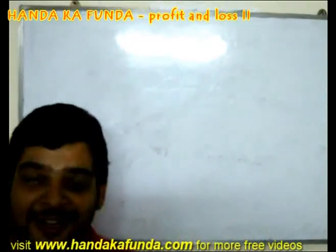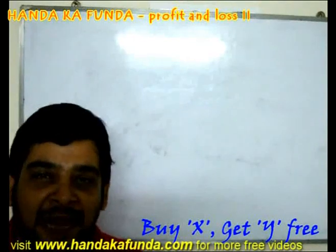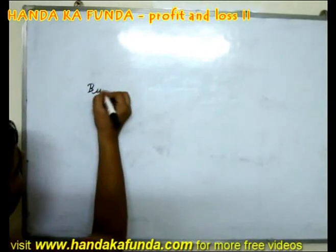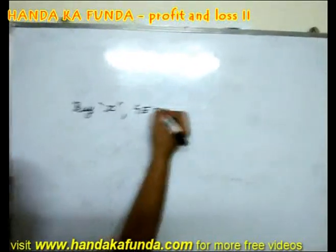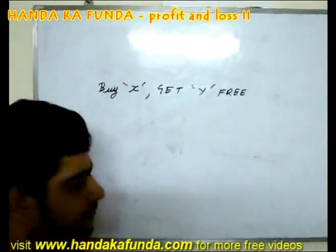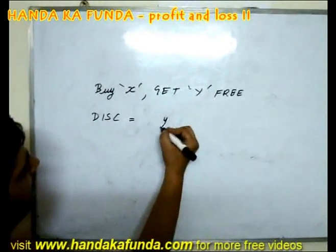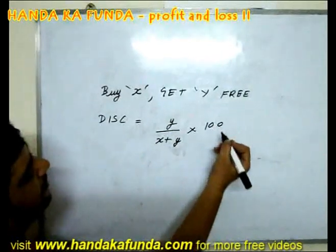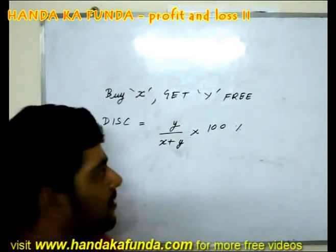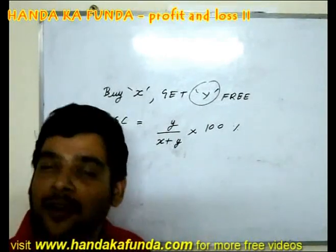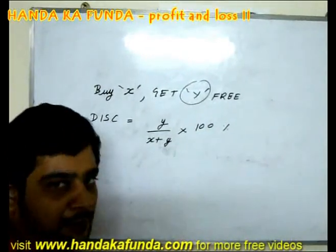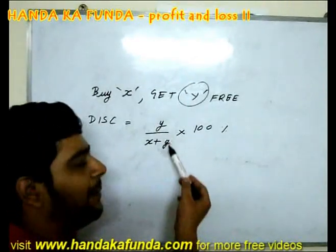Another popular form of discount is buy X get Y free — for example, buy 1 get 1 free, or buy 2 get 3 free. What discount is offered if you buy X goods and get Y goods free? The answer is Y divided by (X plus Y), multiplied by 100. This is because Y is the number of goods you get for free — that is the discount — and X plus Y is the total number of goods you take home, which represents the marked price basis.